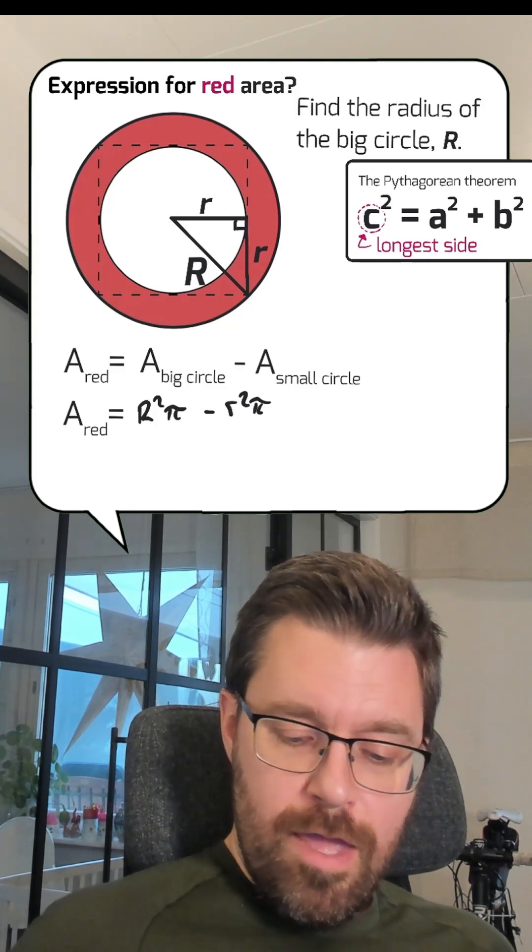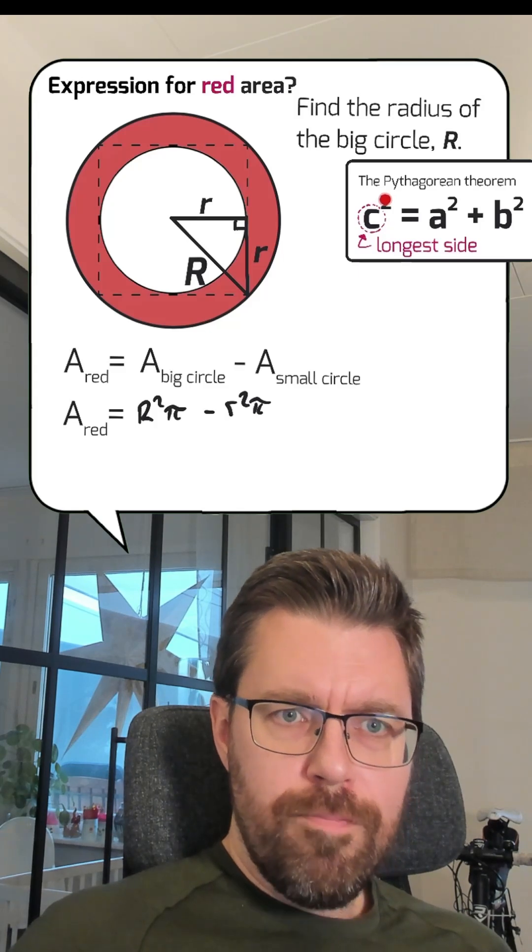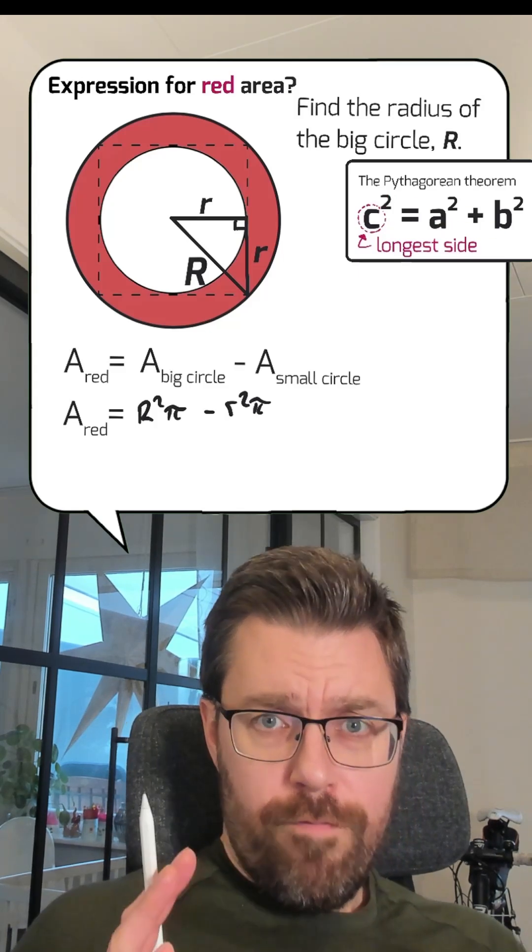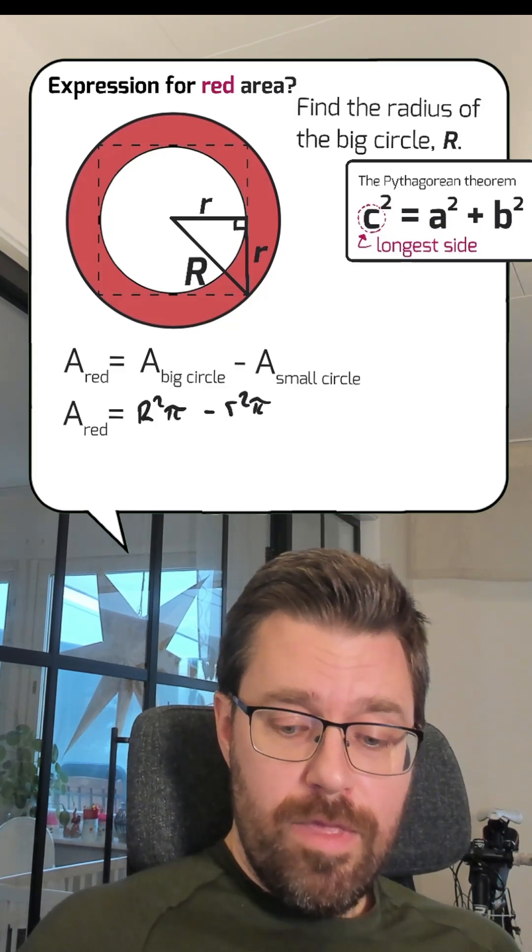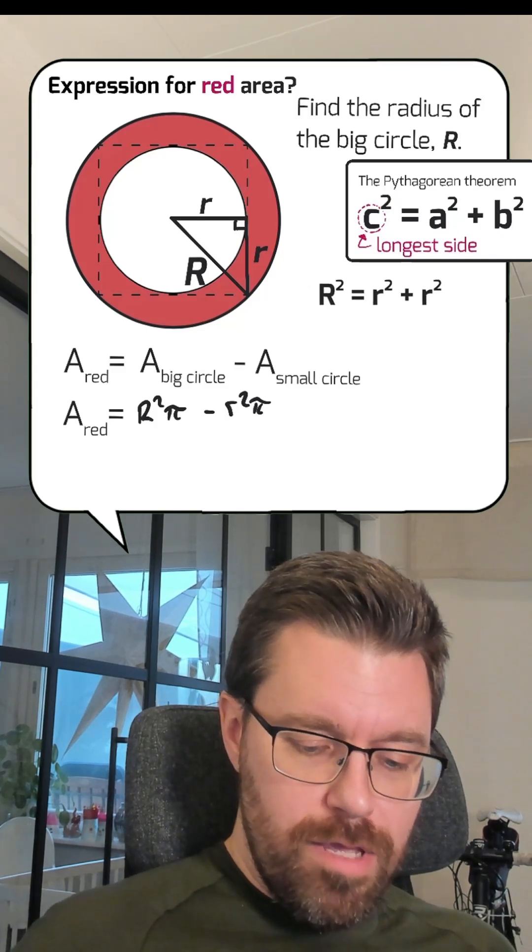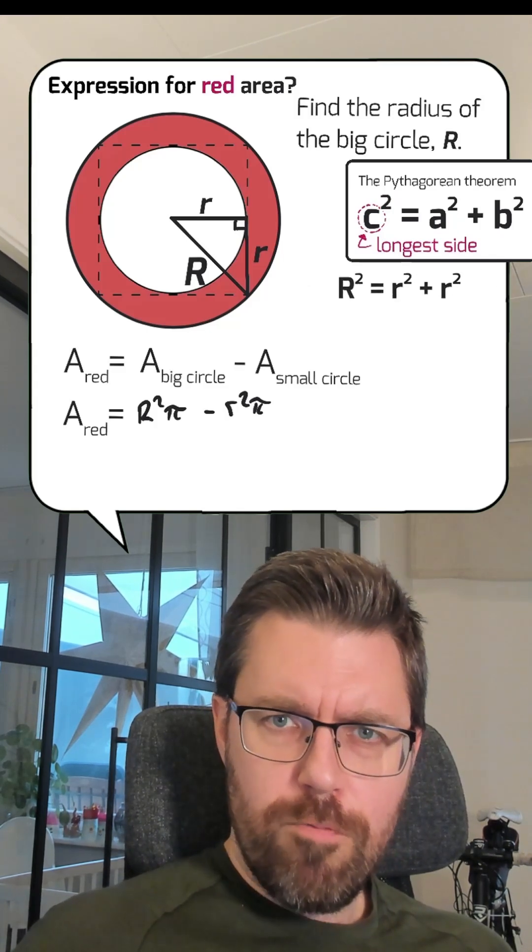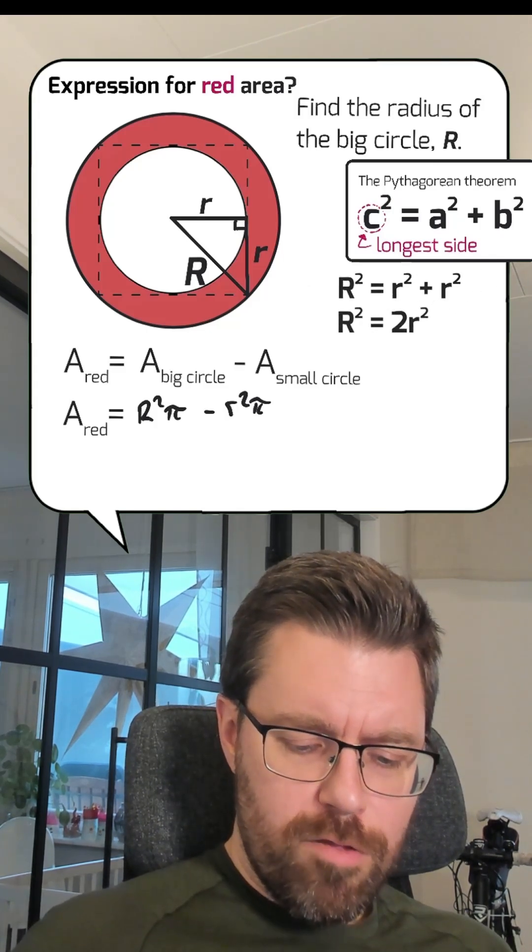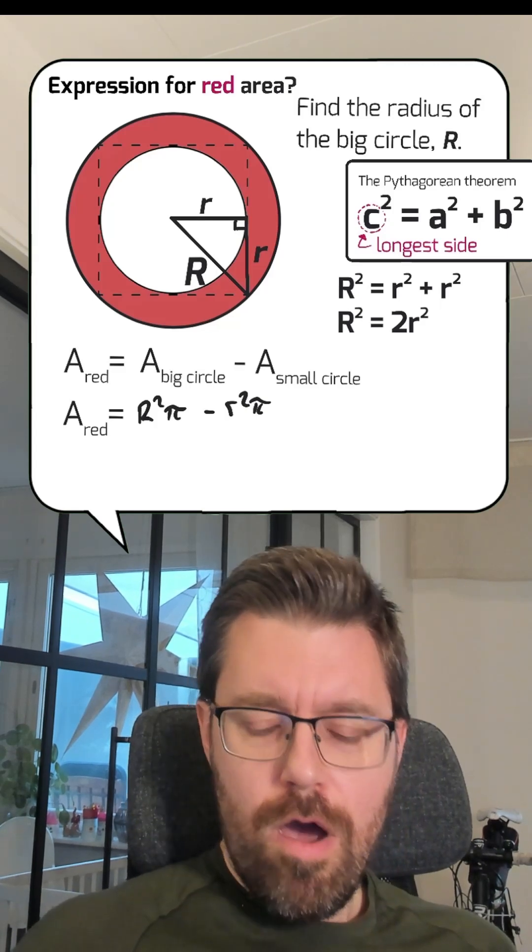And then, if we take the big R squared equals the sum of the small sides squared, then we've got big R squared equals r squared plus r squared. And then, big R squared equals 2r squared.